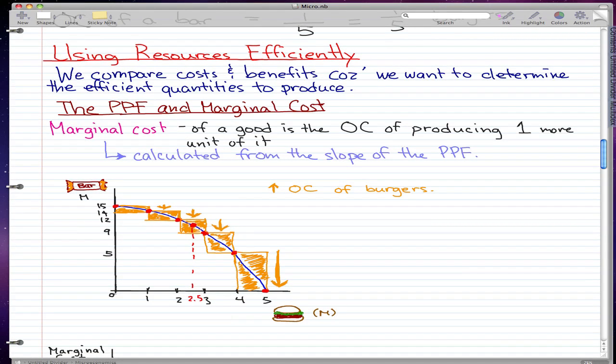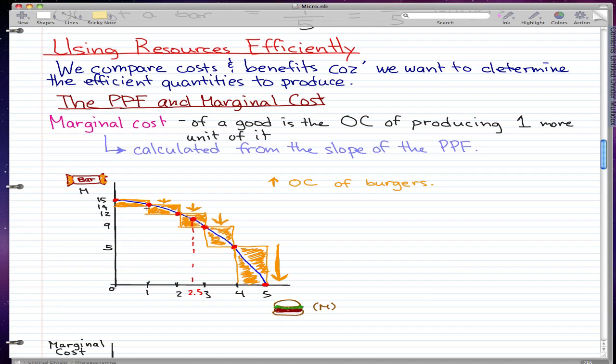This graph here illustrates the marginal cost of a burger. As we move along the PPF, the opportunity cost of a burger increases. We can see here that moving from 0 to 1 million burgers, our energy bars, it costs us a million energy bars because it drops from 15 million to 14 million. Now moving from 1 million to 2 million, it goes from 14 million bars to 12 million bars, a drop of 2 million bars.